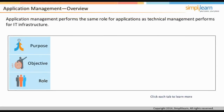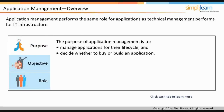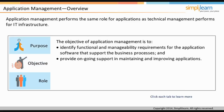Application management performs the same role as technical management performs for IT infrastructure. The purpose of application management is to manage applications for their lifecycle and to decide whether to buy or build an application. The objective is to identify functional and manageability requirements for application software that supports business processes, and to provide ongoing support in maintaining and improving applications.